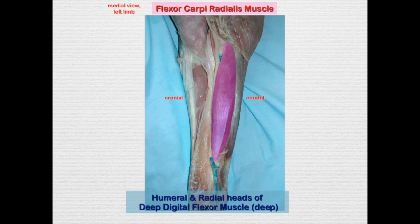In the bovine, the median nerve also innervates the superficial digital flexor muscle. These muscles are going to flex the carpus and the digit. Remember, if it doesn't say digital in the name, it's not going to act on the digits — it's only going to act on the carpus.